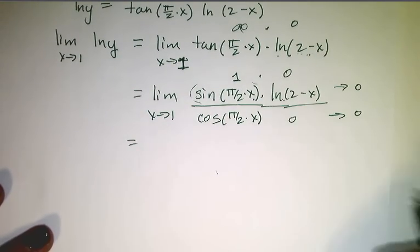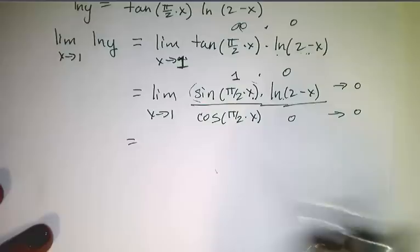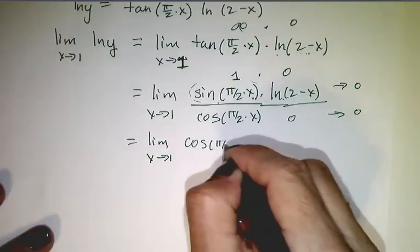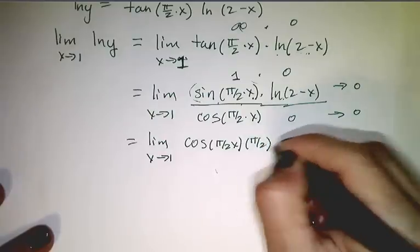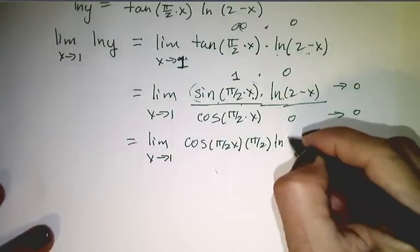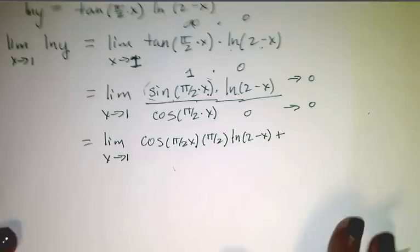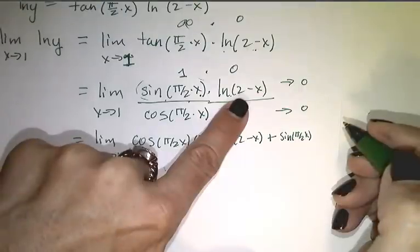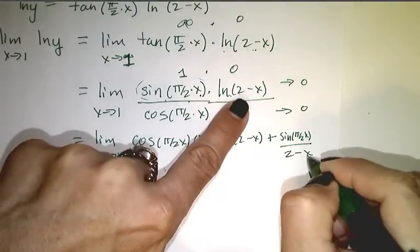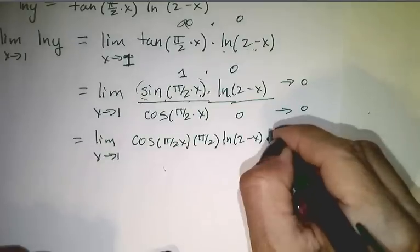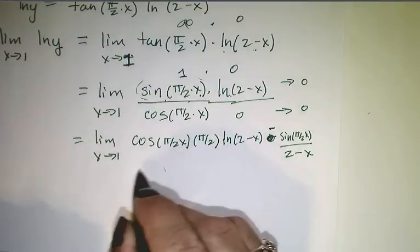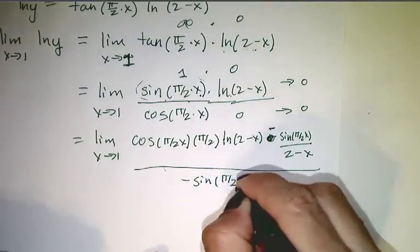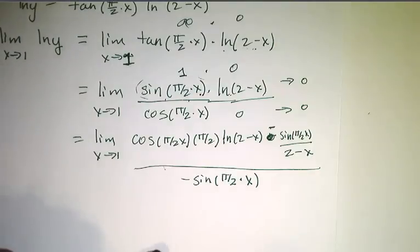We take the derivative of the top and the derivative of the bottom and then explore the limit again. The derivative of the top — using the product rule — is cosine of pi over 2 times x times pi over 2, times ln(2 minus x), plus sine of pi over 2 times x times 1 over (2 minus x) times negative 1. So I'll switch that to a minus. All over negative sine of pi over 2 times x. Although that looks complex, it might actually turn out to be nice.